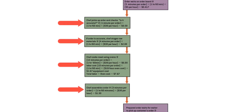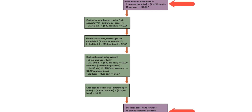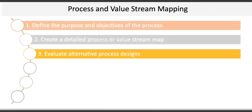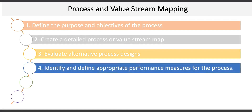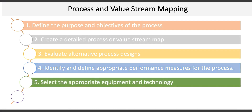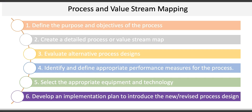Notice that we differentiate between value-added and non-value-added activities. Value-added activities are those that add value to the customer or product, and the company tries to optimize them. Non-value-added activities are those that don't add value, and we try to minimize or eliminate them altogether. After visually mapping or flowcharting, the third activity is to evaluate alternative process designs. Next is to identify KPIs or key performance indicators for the process. Fifth is to select the appropriate technology and equipment to implement the process. And finally, the last activity is to develop an implementation plan to introduce the new or revised product.